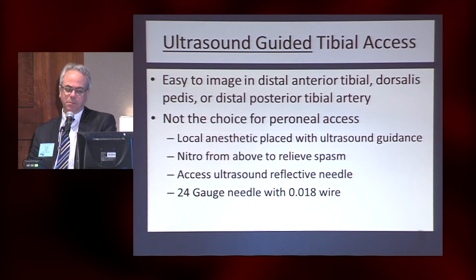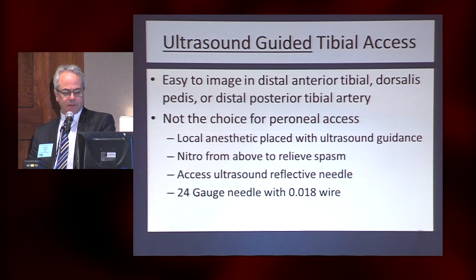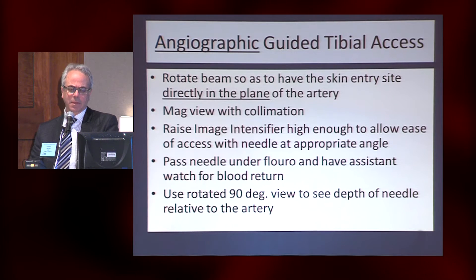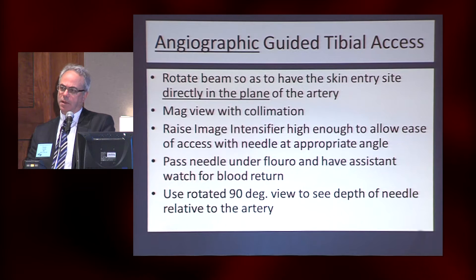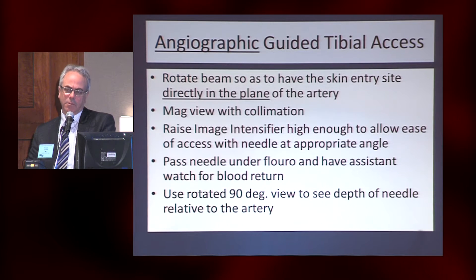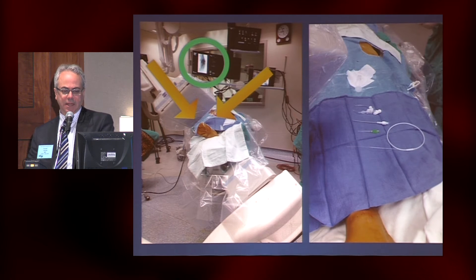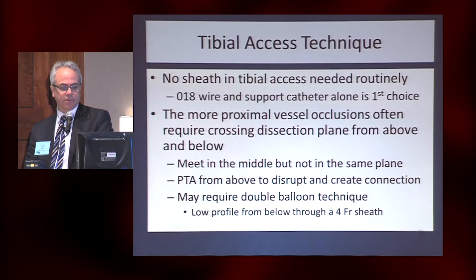You need nitro to relieve spasm, because if you just manipulate the vessel it spasms quickly, particularly in younger patients. Use a reflective needle on ultrasound and the 24-gauge O18 wire — you're not able to fluoro this; you need to have a feel for the wire going in. Angiographic-guided tibial access also works really well. You need two views of the foot, mag view, and good collimation. Don't lower the image intensifier so close you can't work — you need space over the foot.